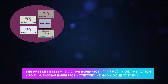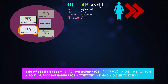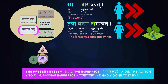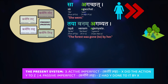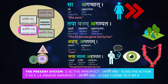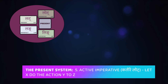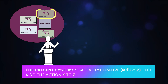Then we learned how to make both active and passive simple past tenses. These are known as the kartari and karmani lang, the imperfect. Sa agachat — she went. Taya vanam agamyata — the forest was gone to by her. Aham apasyam — I saw. Maya mala adrushyata — the garland was seen by me. Then we learned the imperative tense, also known as the lot — this is how you give specific orders or commands or a public declaration.